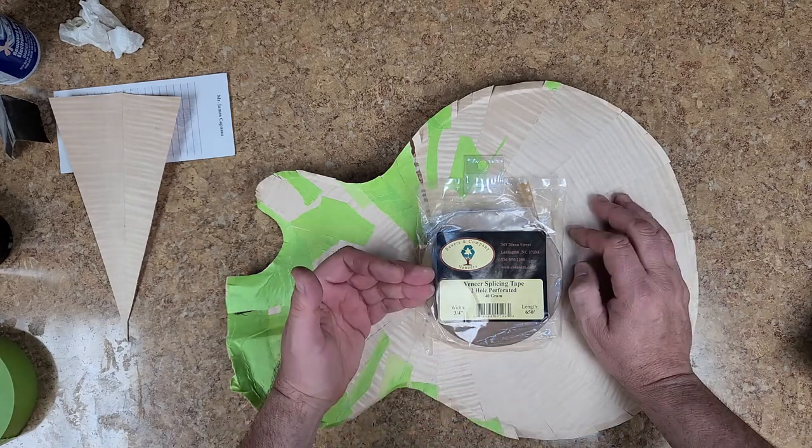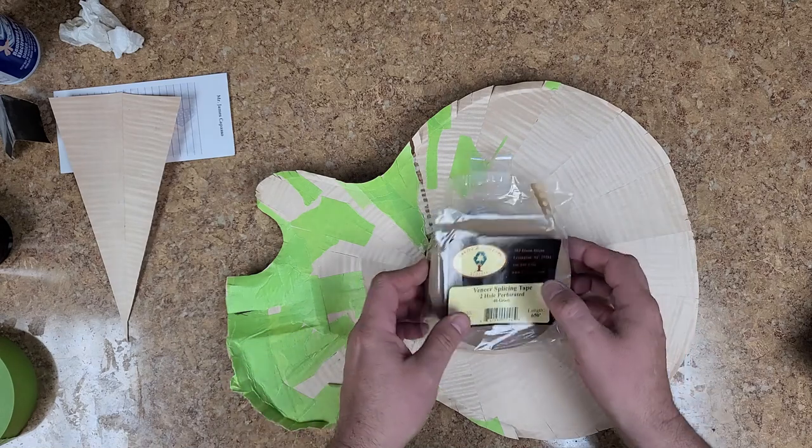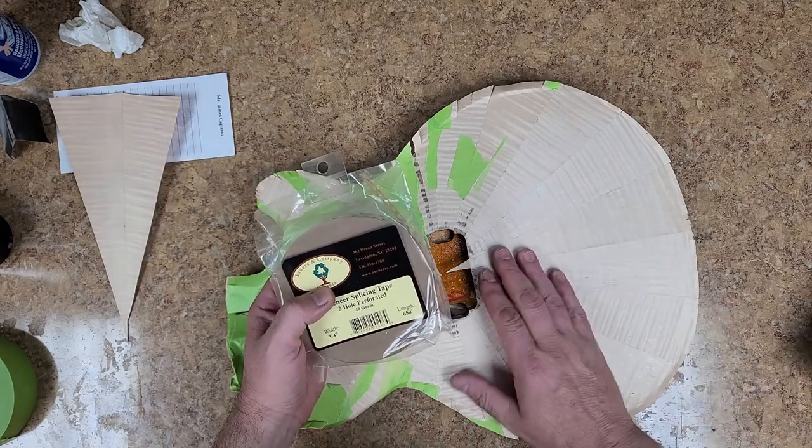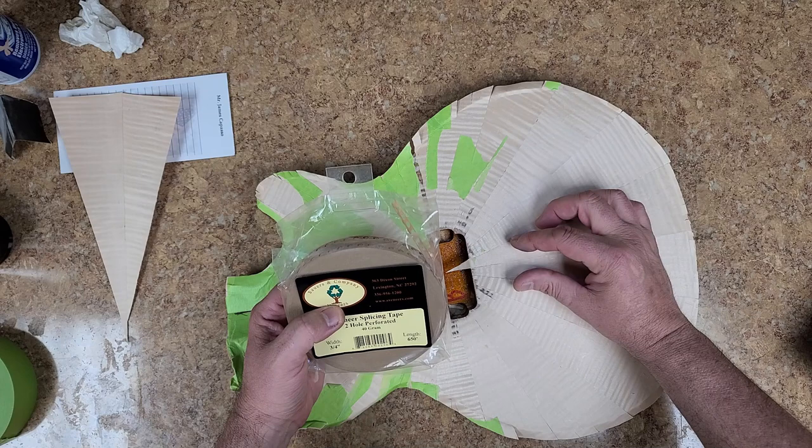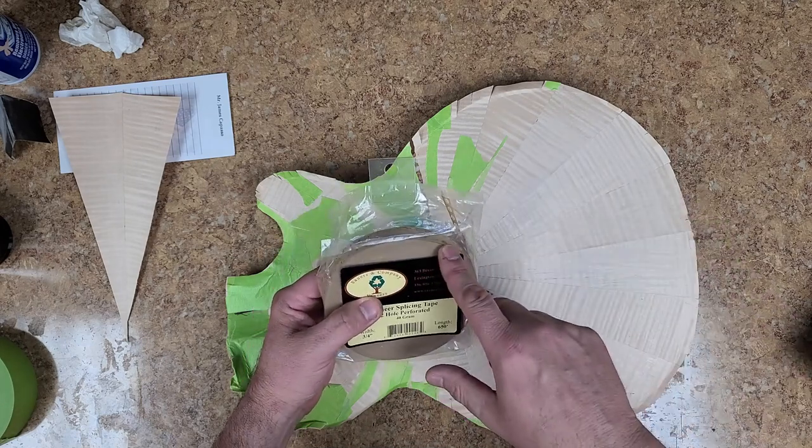And what you do is you wet this. You get it wet and you put it over the seams after you pull the seams together. You can take an iron and heat it up a little bit, just kind of take an iron for ironing clothes. Go over that seam and it'll pull the seam back together tight as it dries the glue and the tape.